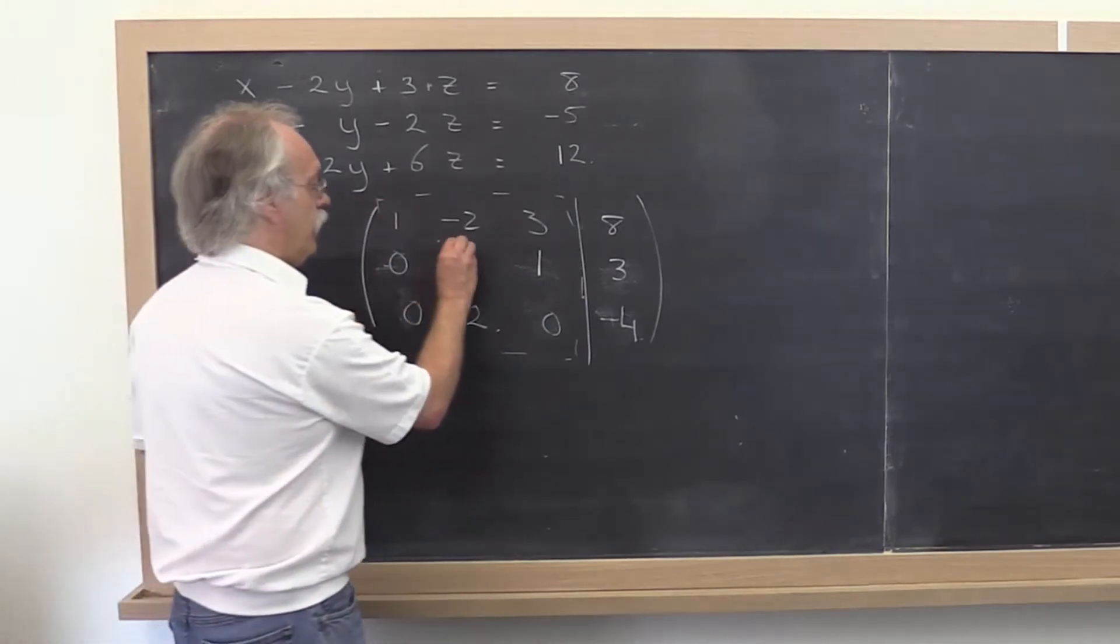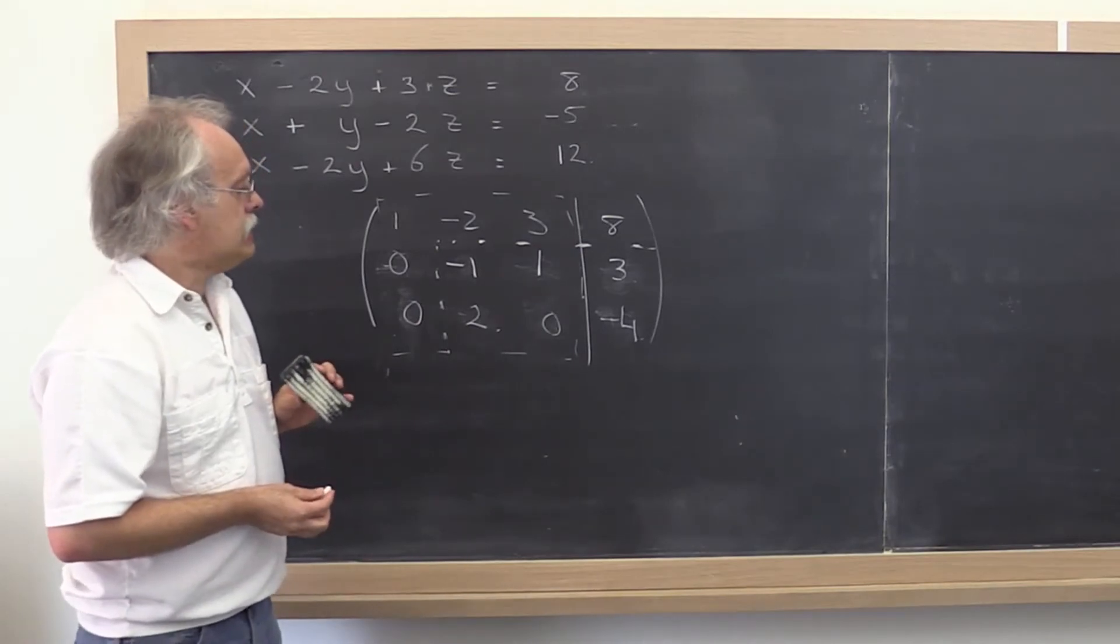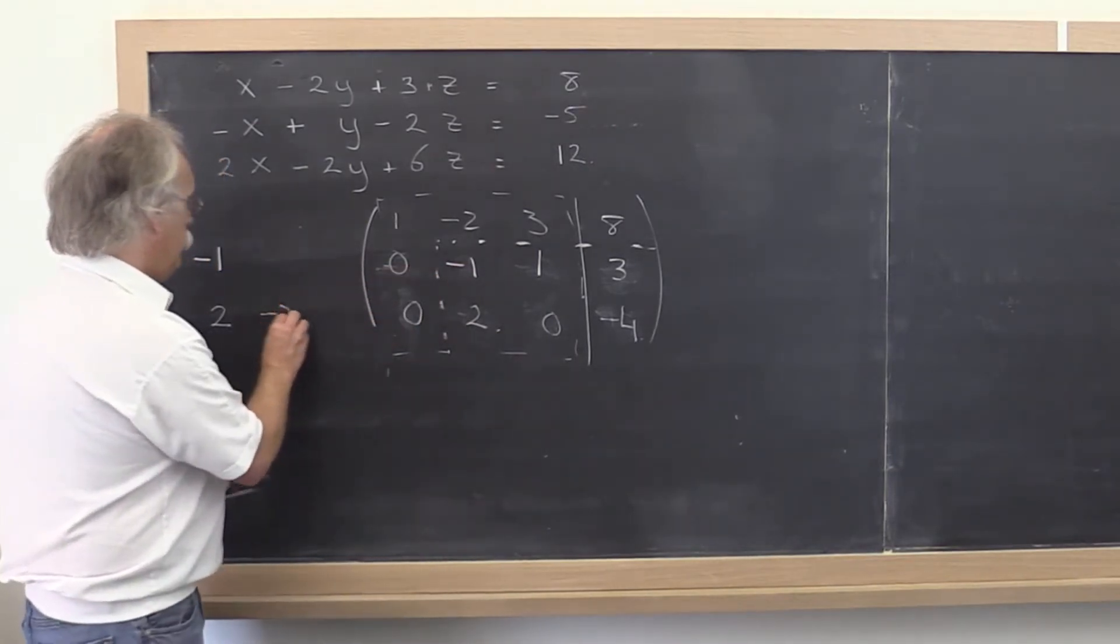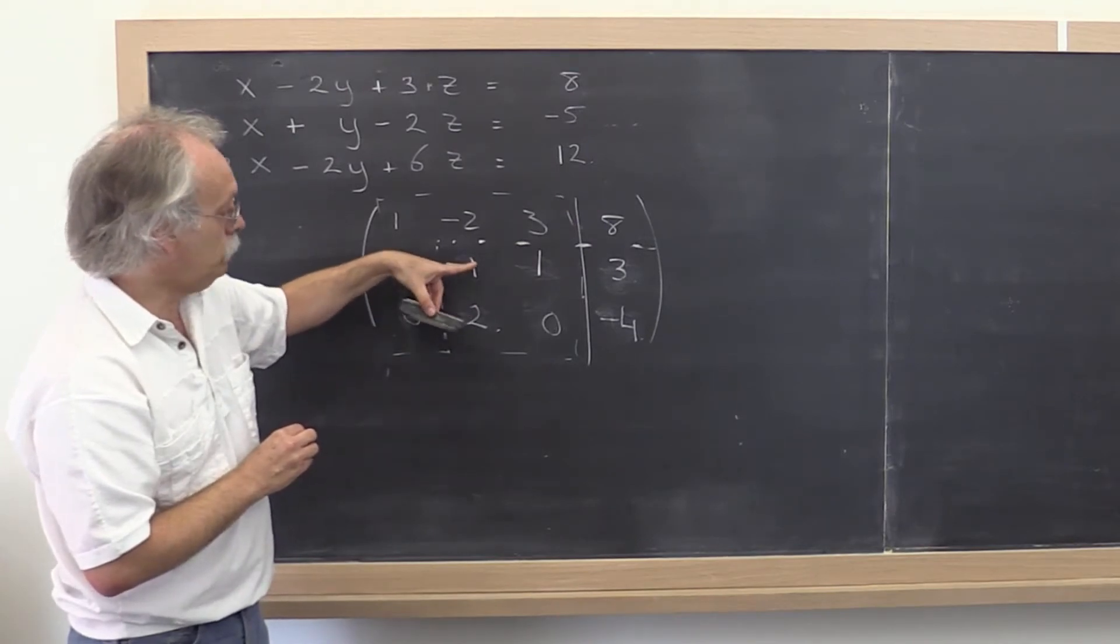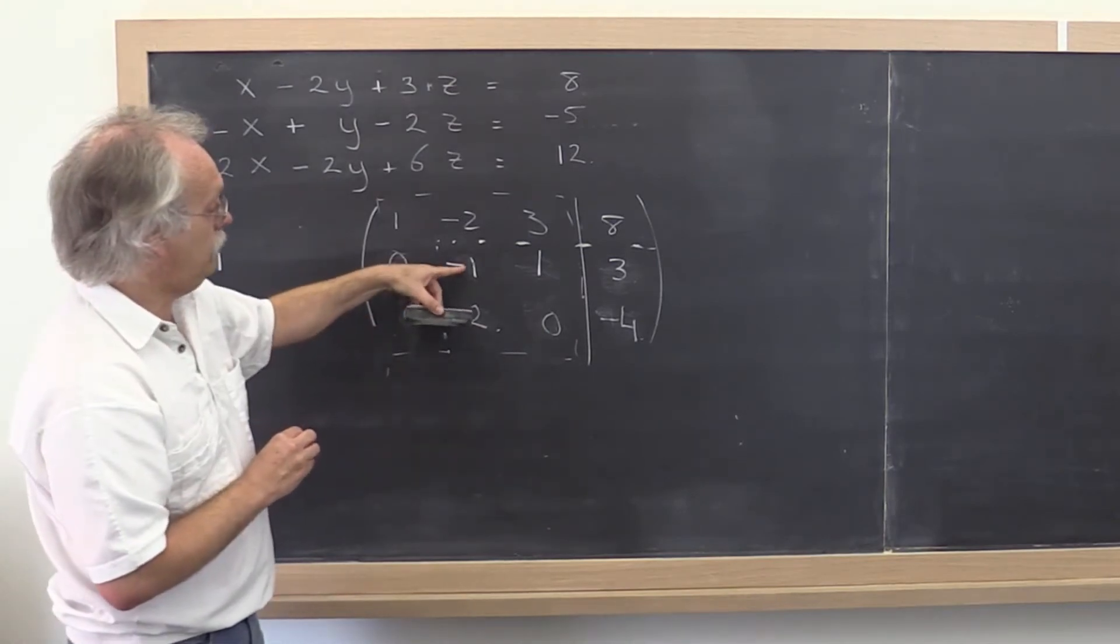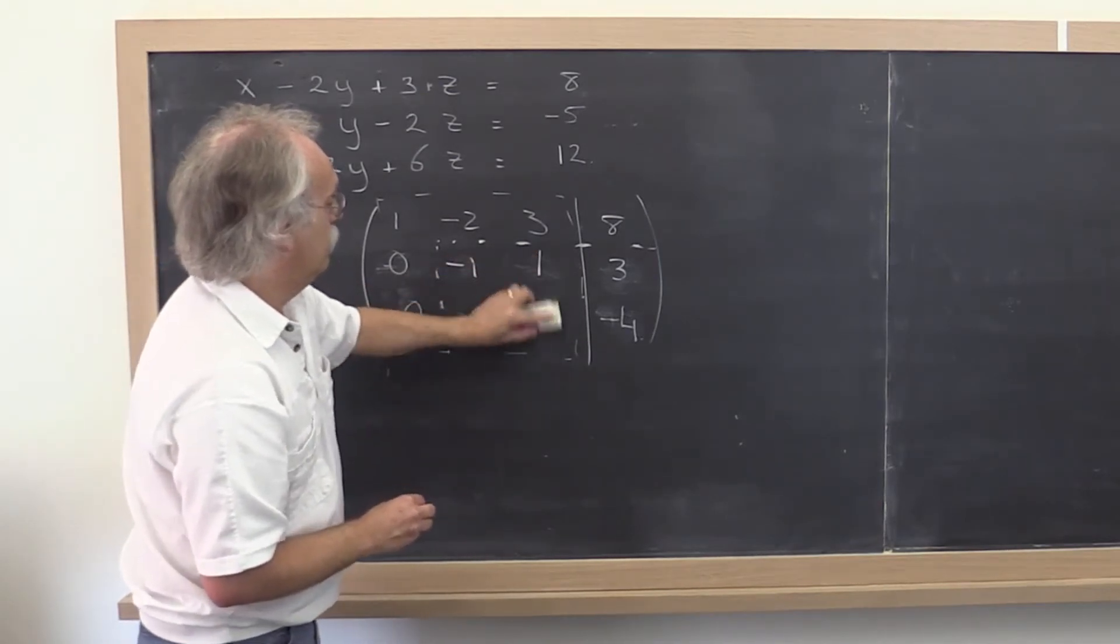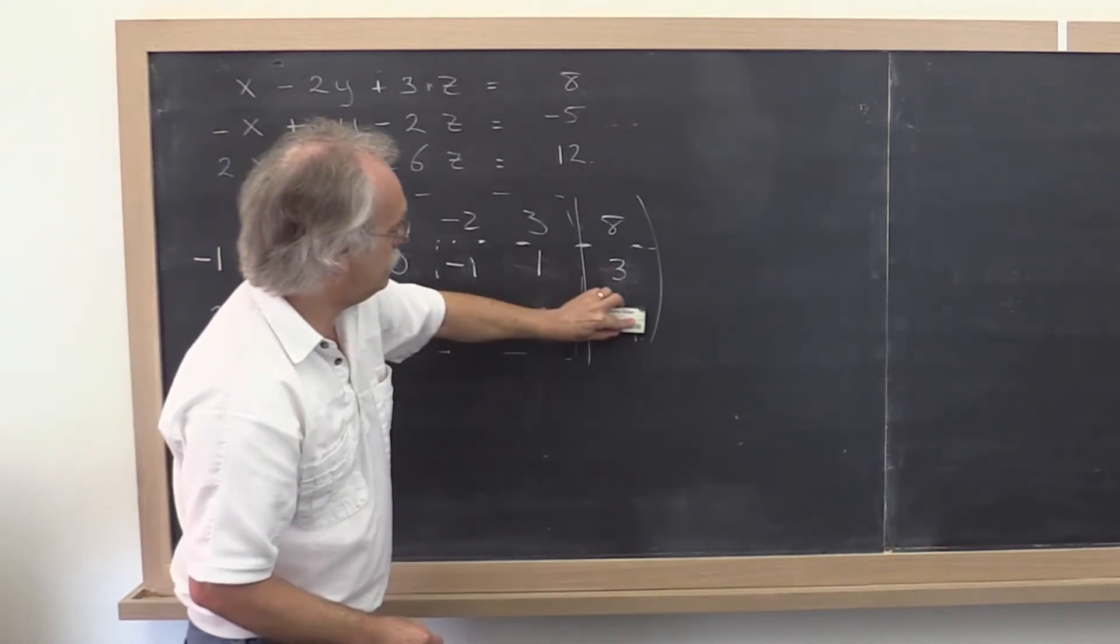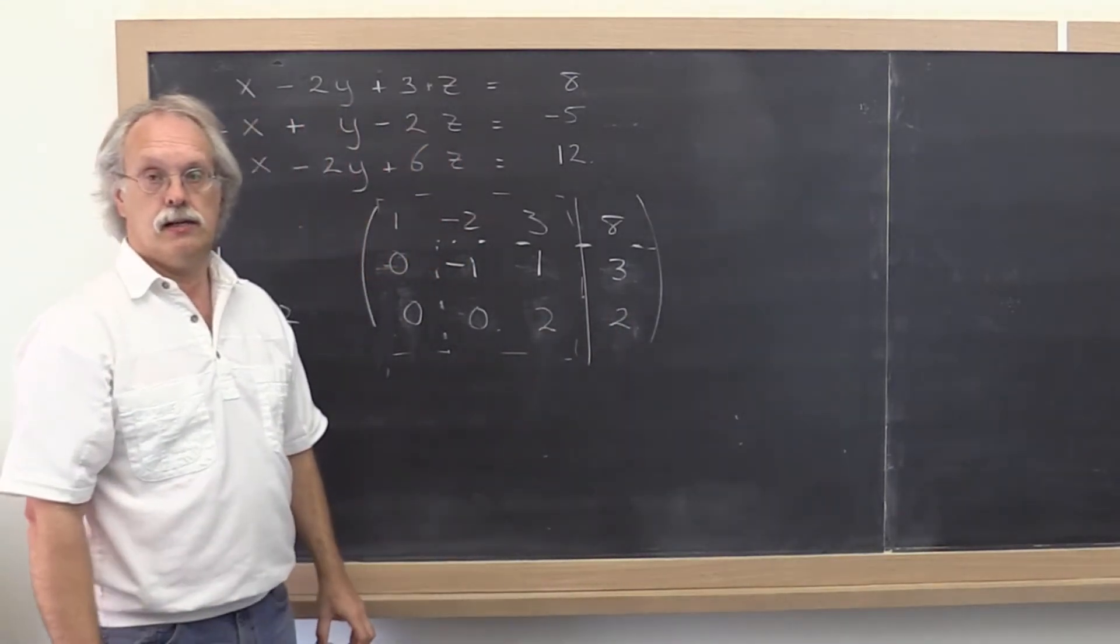And then what? Then we say, okay, we can think of this as a smaller subsystem. And then what? Then we can do minus 2 times this row subtracted from that row, which of course is the same as doing 2 times this row and adding it to that row. And if you do 2 times this and add it to that you get 0. If you do 2 times that and add it to that you get 2. And if you do 2 times that and add it to that you get 2.